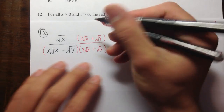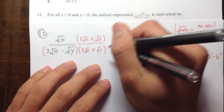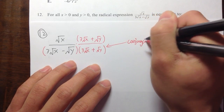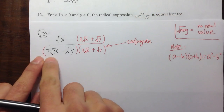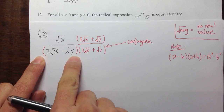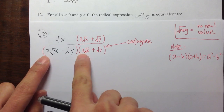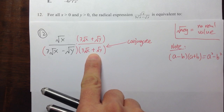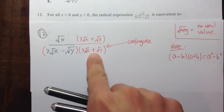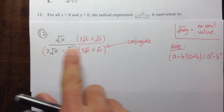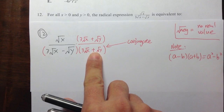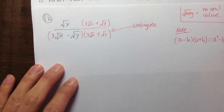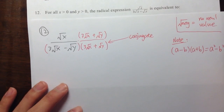This is called the conjugate. If you have something minus something, especially with square roots, you multiply by the same expression but with the opposite sign — minus becomes plus, and if it was a plus, you'd multiply by the negative. Multiplying top and bottom by the same expression doesn't change the value of the fraction. That's the first key step.